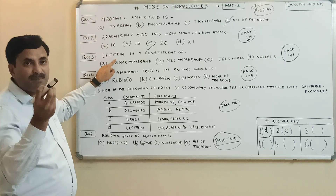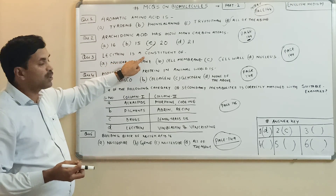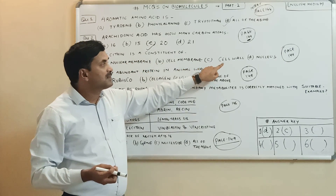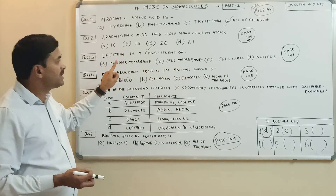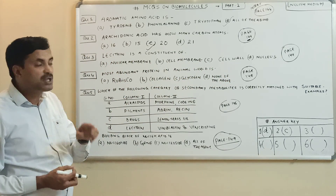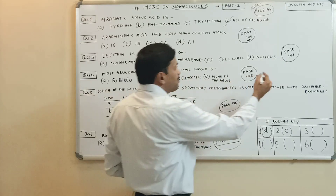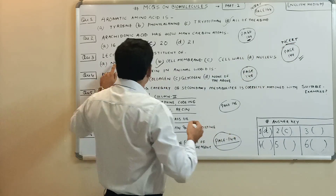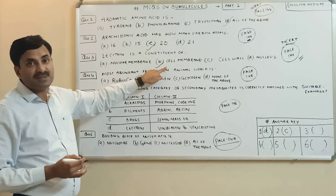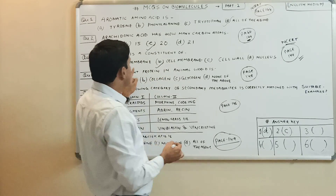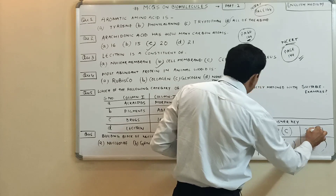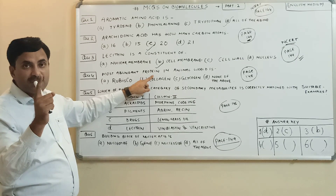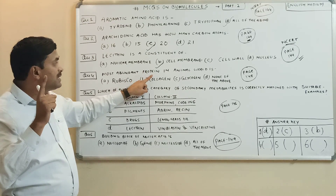The third question is about lecithin. Lecithin is basically a phospholipid. The question asks: lecithin is a constituent of — nuclear membrane, cell membrane, cell wall, or nucleus? Always remember that lecithin is a constituent of the cell membrane. On page number 144 of NCERT, it is clearly mentioned that lecithin is a constituent of cell membrane. So the answer to question number three is option D — cell membrane.